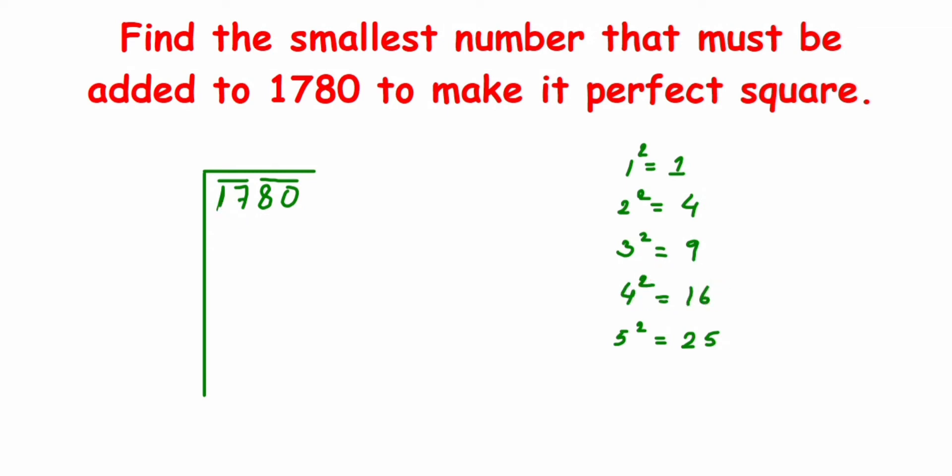I'll go with 16. Four squares are 16, so I'll write down here 4 into 4, or 4 fours are 16, and subtract it. You get the remainder 1. Now I'm going to drop 80 here, the entire pair 80, not a single digit 8. So now I got 180 here.